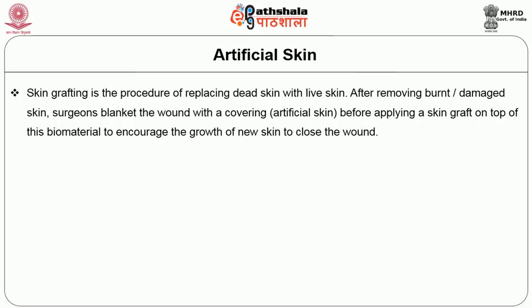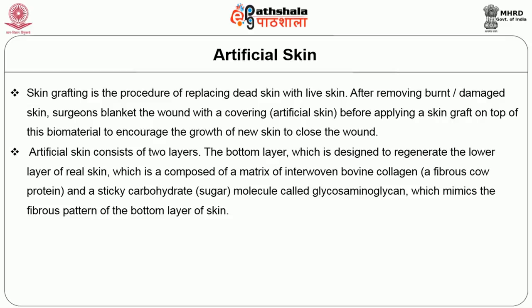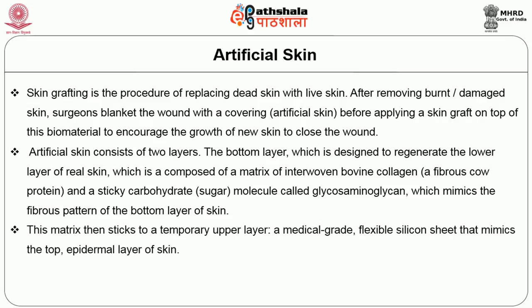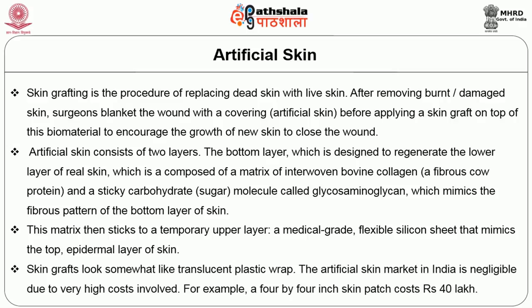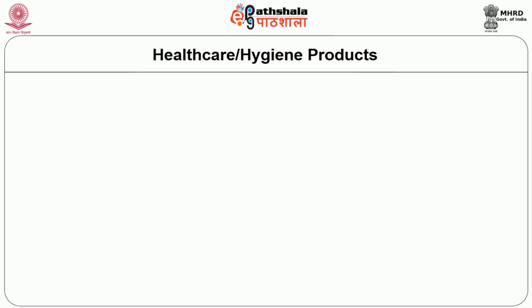Skin grafting is a procedure of replacing dead skin with live skin after removing burnt or damaged skin. Surgeons blank the wound with a covering before applying the skin graft on top to close the wound. Artificial skin consists of two layers: a bottom layer of real skin composed of a matrix of interwoven biocollagen and a sticky carbohydrate molecule called glycosaminoglycan, which minimizes the fibrous pattern of the bottom layer of skin. This matrix then attaches to a temporary upper layer — a medical-grade flexible silicone sheet that mimics the top epidermal layer of skin. The artificial skin market in India is negligible due to the very high cost involved; for example, a 4x4 inch skin patch costs about Rs. 40 lakhs.